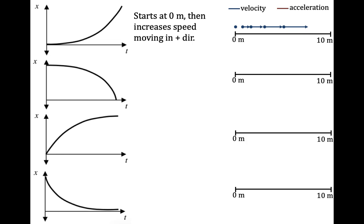I can also draw acceleration arrows. When an object is increasing its velocity — going faster and faster — the acceleration is going to be helping the velocity, so they point in the same direction. Since the velocity vectors are getting longer and longer, the acceleration points in the same direction. You can think of it as each step adding to the velocity by about the same amount, giving constant acceleration.